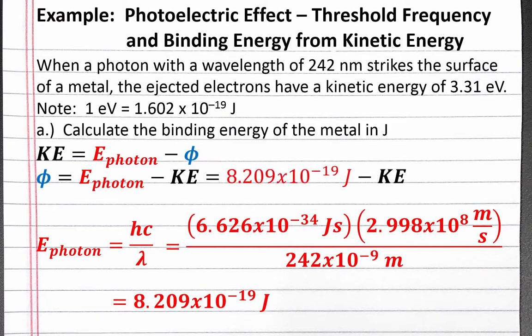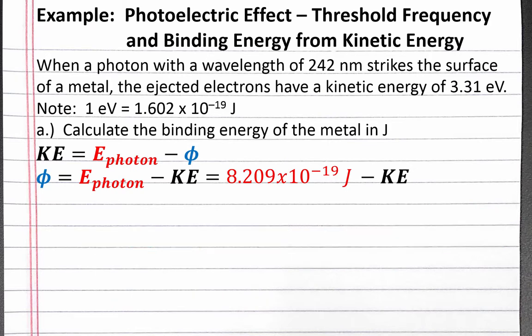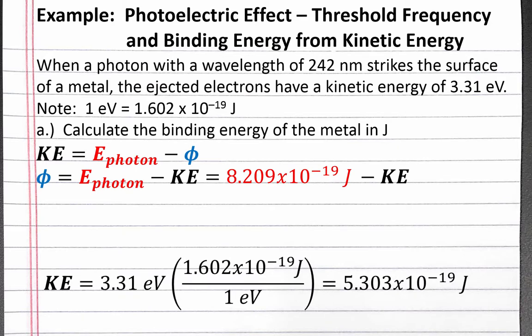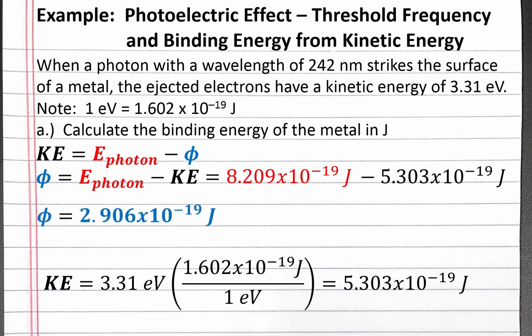The next step is to find kinetic energy. We're given kinetic energy in the problem, but we can't substitute it into this equation in electron volts — we need joules. To convert from electron volts to joules, we use dimensional analysis. We're given that one electron volt equals 1.602 times 10 to the negative 19th joules. Completing the calculation, we get 5.303 times 10 to the negative 19th joules for the kinetic energy of the electron. Substituting this into our equation and solving for binding energy, we get 2.906 times 10 to the negative 19th joules. This value is the binding energy for a single electron.